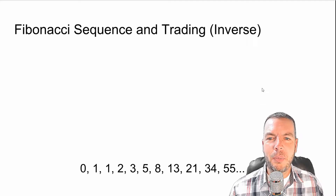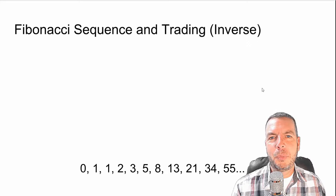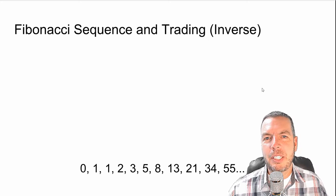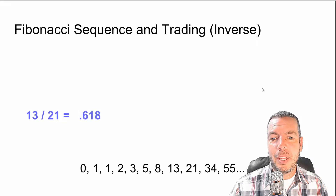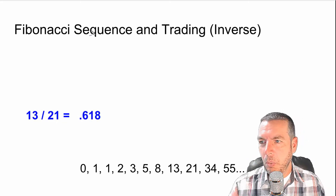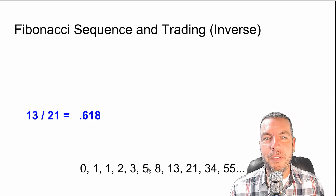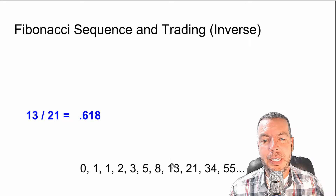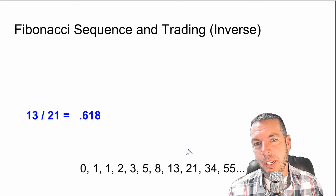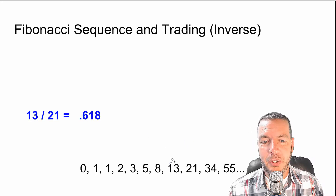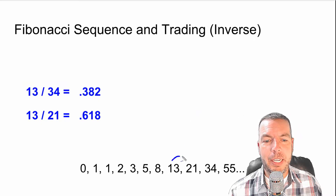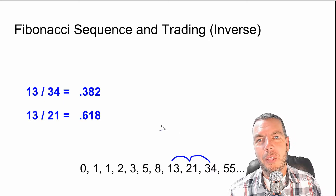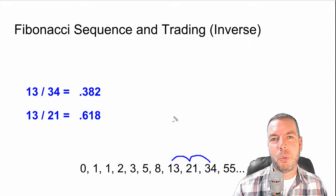So how does it all play out in trading? In Fibonacci trading, we use the 1.618 and also its inverse. To get the inverse, instead of dividing the higher number by the lower number, we now divide a lower number by a higher number. So taking 13 divided by 21 — going one place out — gives us 0.618. Going two places out, taking 13 divided by 34, gives us 0.382, which is basically the square root of 0.618.